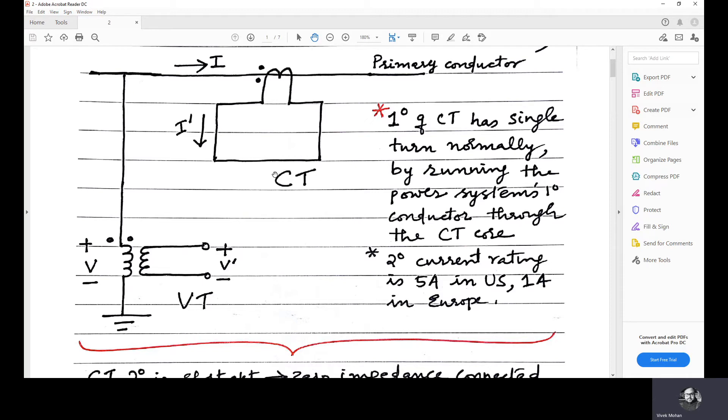And here, the secondary is short-circuited, assumed to be ideally short-circuited. And here, the secondary is assumed to be ideally open-circuited or having infinite impedance.